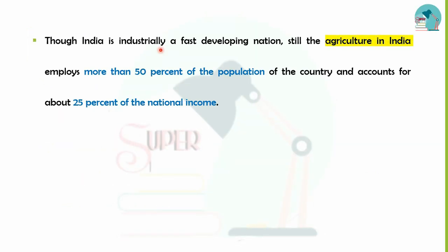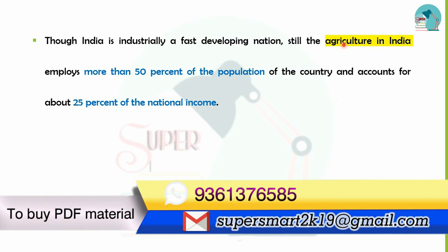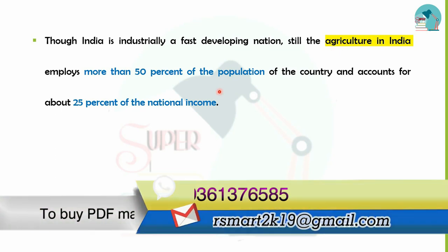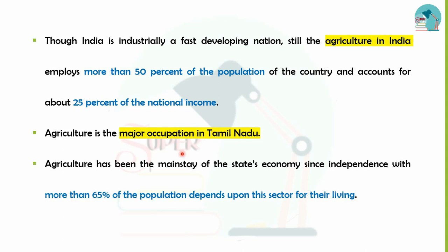India is a fast developing nation, but agriculture accounts for 50% of the country's activity. In India, agriculture contributes around 25% of income. In Tamil Nadu, agriculture is a very important part of the country, contributing 25% of income.